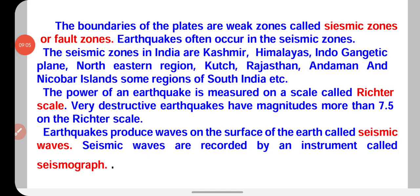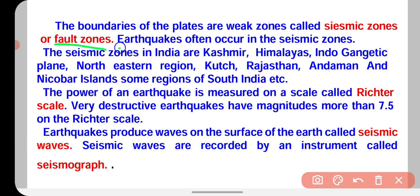The boundaries of the plates are weak zones and they are called seismic zones. Jahan par do plates ki boundary hogi, wahan weak zone hoga, aur wohi par earthquake ke aane ka khatra hoga. Is zone ko hum fault zone ya seismic zone kehte hain. Earthquakes often occur in the seismic zone — isi zone mein earthquake ke aane ki possibility maximum hoti hai. India mein seismic zone Kashmir, Himalaya, Indo-Gangetic Plain, North Eastern region, Kutch, Rajasthan, Andaman and Nicobar Islands, aur South India mein paya jata hai.